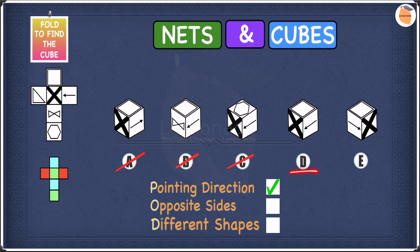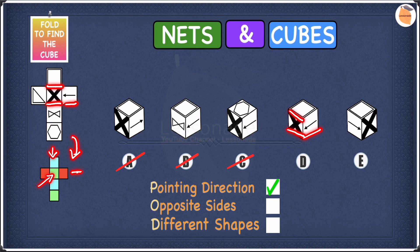Now let's go to D. In D the shapes are an arrow, an X shape, and a square. Looking at the net, we have the square, X, and the arrow. In terms of opposite sides, we have the square at the top, the X in the middle, and the arrow towards the right. All of these shapes are in different colors, so none of them are on opposite sides — we can leave D for now.